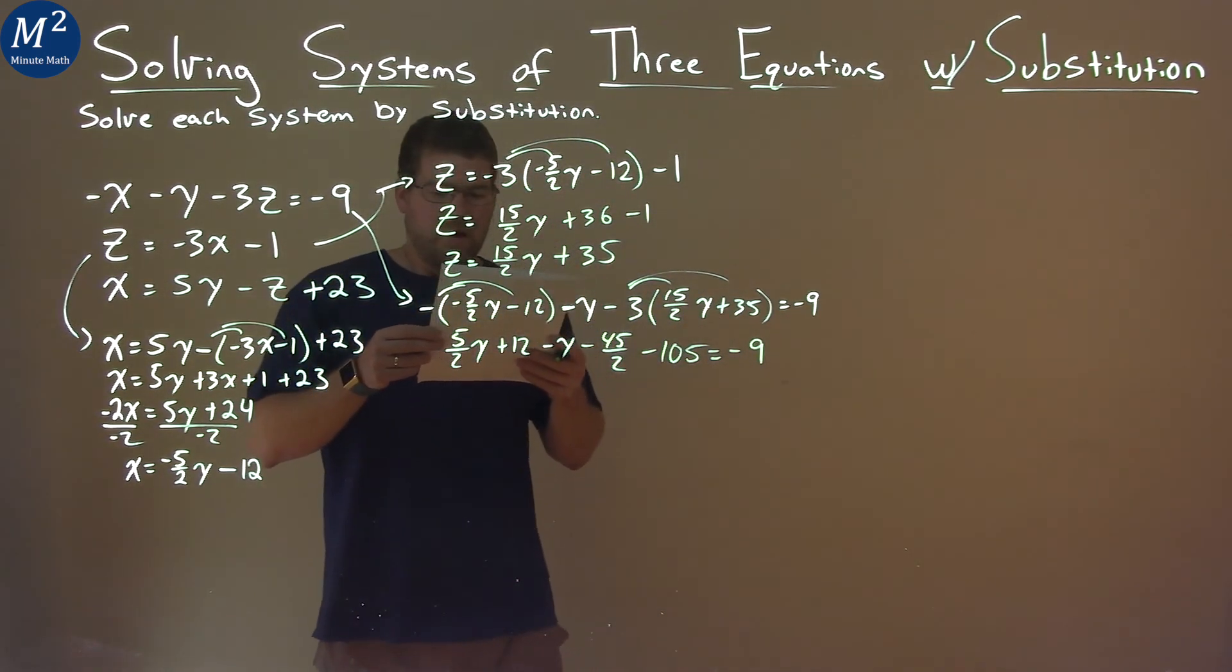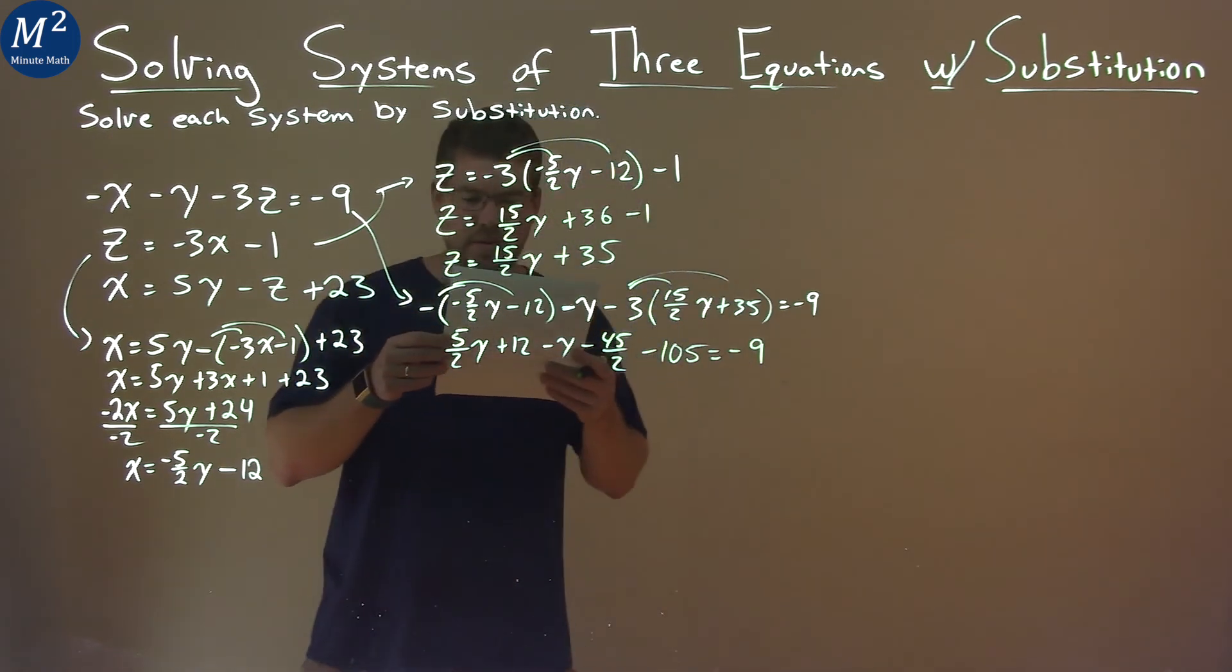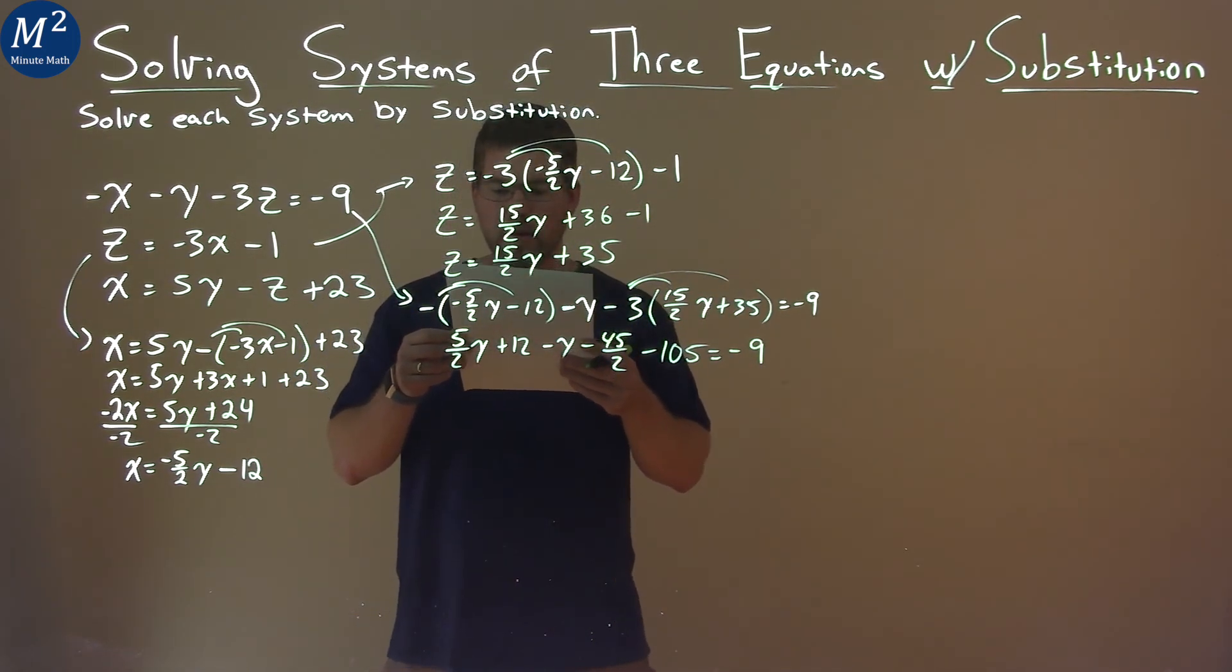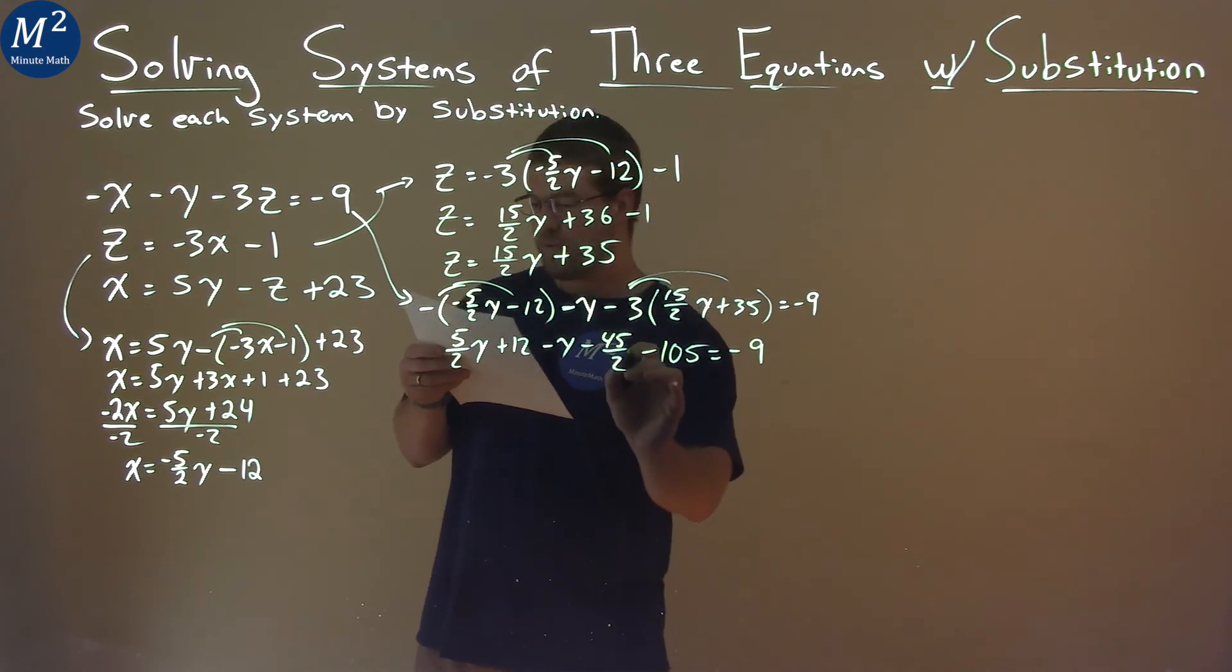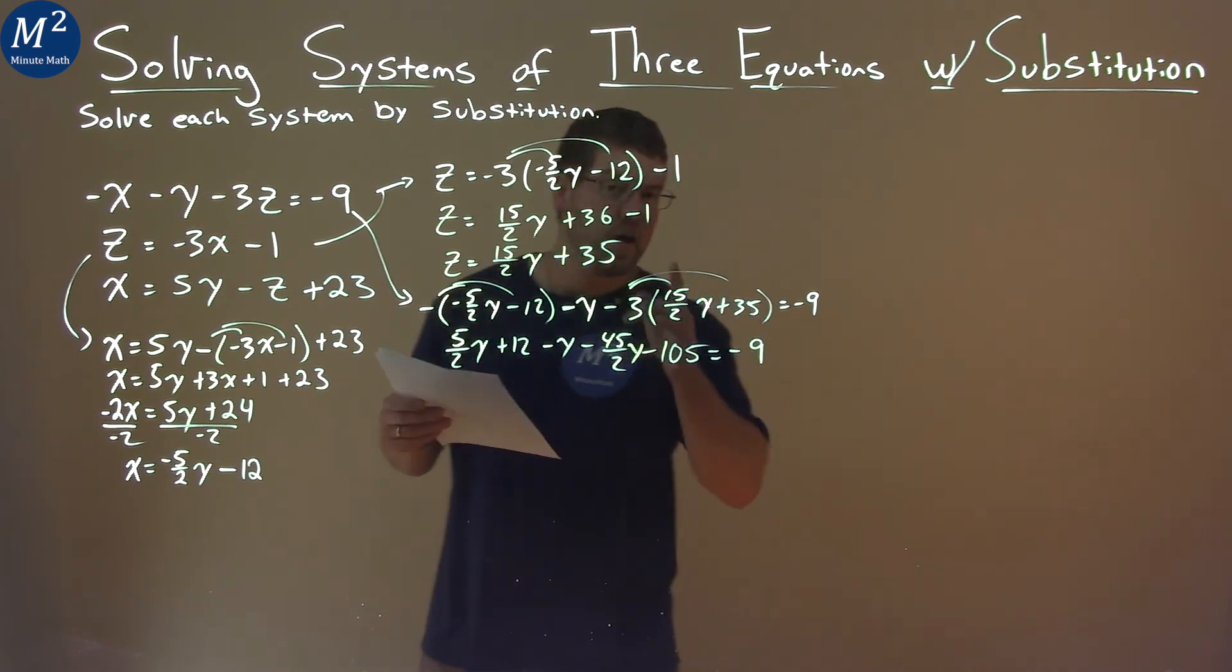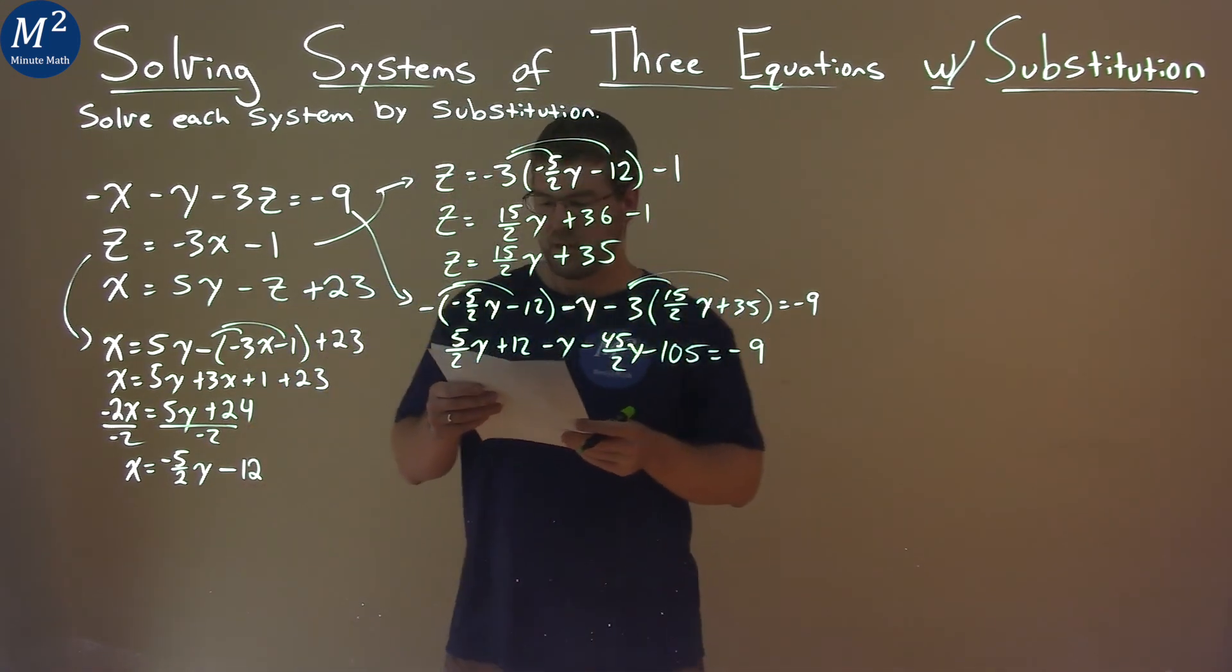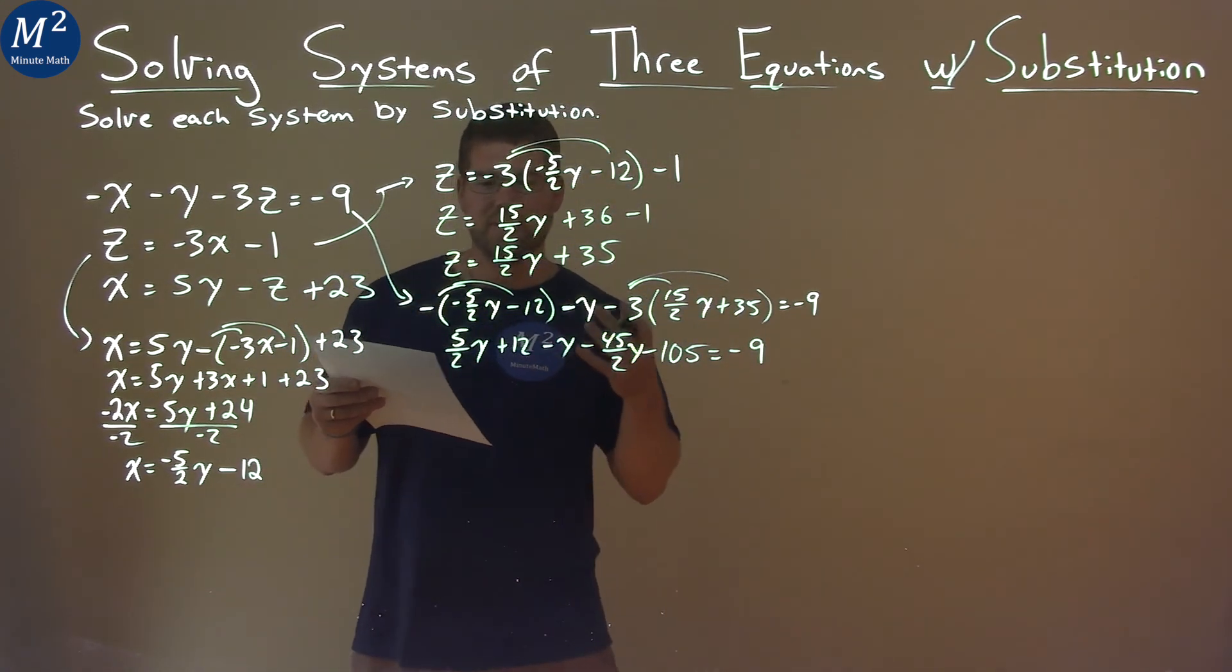So now we want to combine our like terms. This is a y. Oops, negative 45 halves y. See, I knew I was going to forget something. If you caught that, let me know down below. So now we want to combine our like terms.